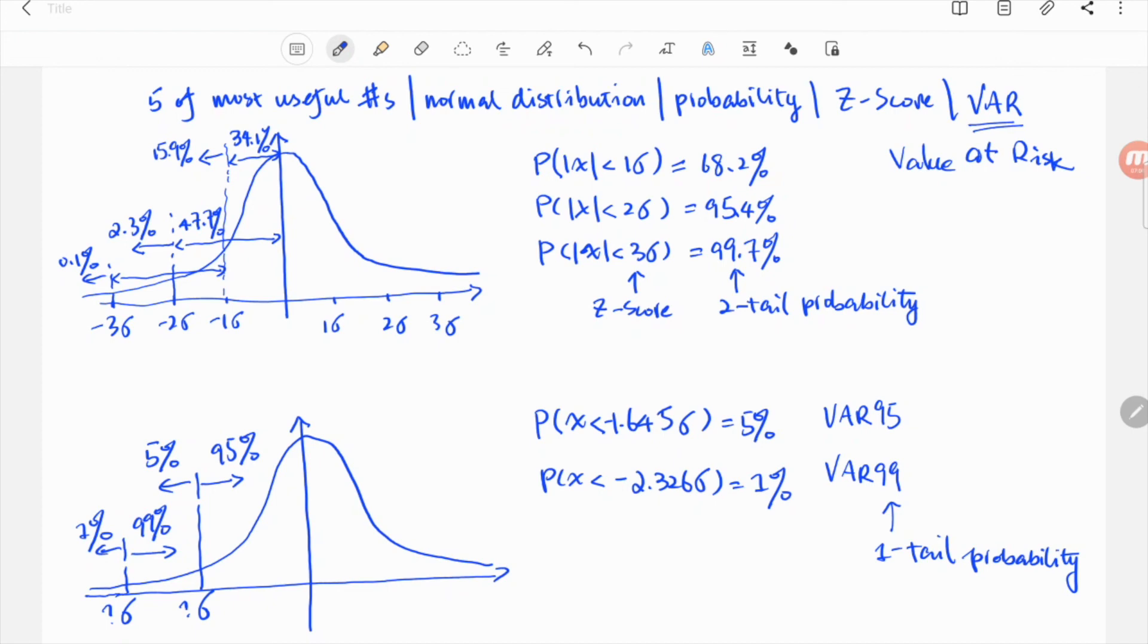So, these five numbers, the two-tail probabilities 68.2%, 95.4%, 99.7% for the three z-scores 1, 2, 3 sigma, and 1.645 and 2.326 sigma for the one-tail probability of 5% and 1% are five of the most useful numbers in my experience. And I hope you will find them useful as well. Okay, thanks for checking this out, and I hope to see you next time. Thank you.